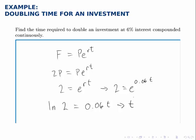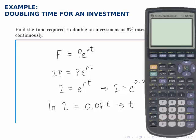So t is natural log of 2 divided by 0.06 and if I use the calculator to approximate this I just type in natural log of 2, get an answer and divide that by 0.06.